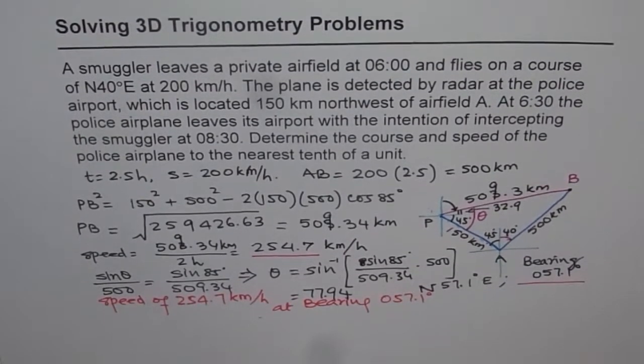So that gives you the course. They are at a bearing of 057.1 degrees with the speed of 254.7 kilometers per hour. So that is the answer for this particular question. Speed of 254.7 kilometers per hour at bearing 057.1 degrees. So that is how you can answer this question. I hope that is absolutely clear. Thank you.